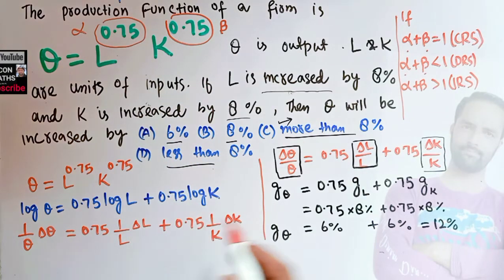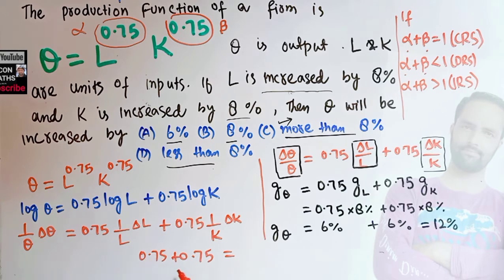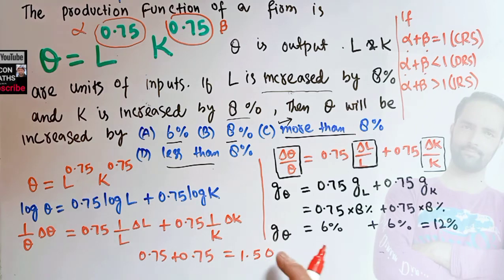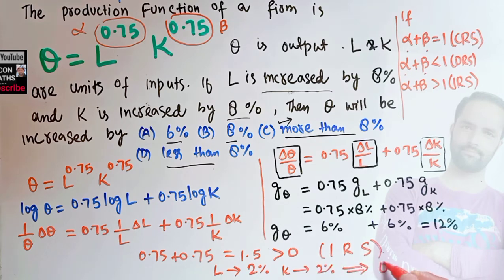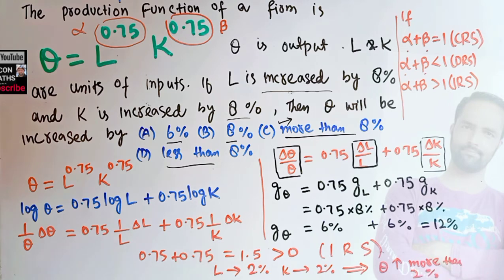Here, 0.75 + 0.75 = 1.5, which is greater than 1, so we have increasing returns to scale. By increasing returns to scale, if labor grows by, say, 2% and capital also grows by 2%, then output will increase by more than 2%. That is the logic behind this.